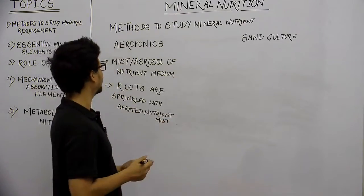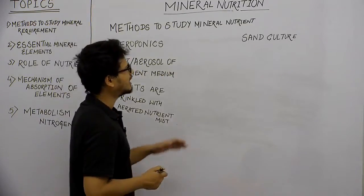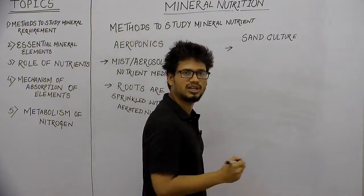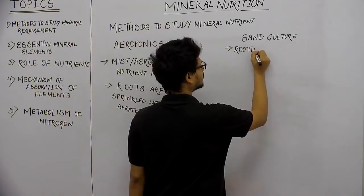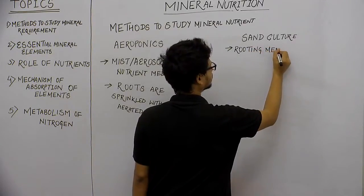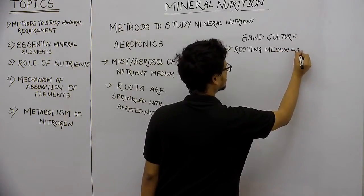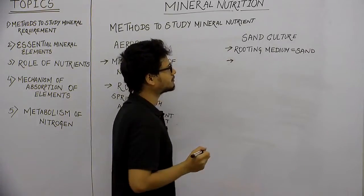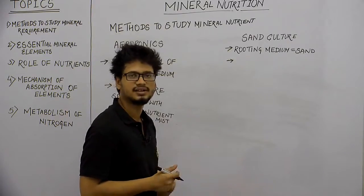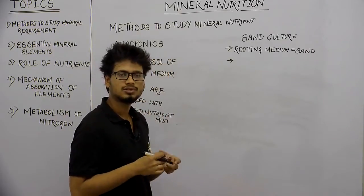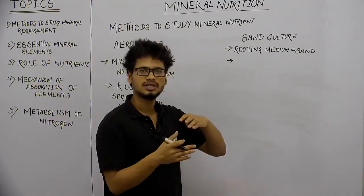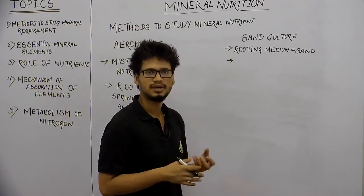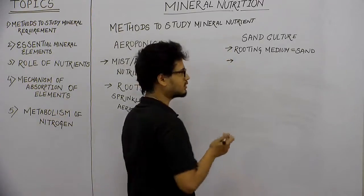Now we will talk about sand culture. Sand culture, as its name implies, replaces soil with sand. So here the rooting medium is sand. In hydroponics and aeroponics, you always need to support the plant because it is hanging in mid-air — either water or air — so you have to keep it supported. In sand culture, because sand is a very dense matrix in comparison to water or air, it does not need a support base — the support base is already there.